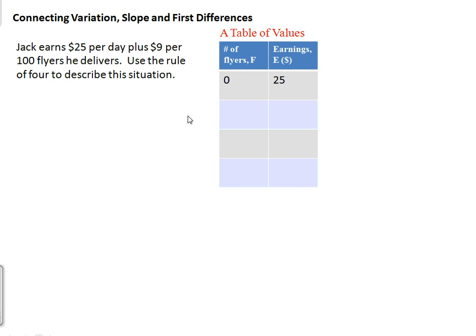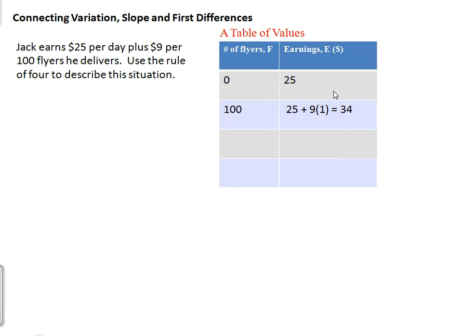Jack earns $25 per day plus $9 per 100 flyers he delivers. Use the rule of four to describe this situation. The question is already given to us in words, explaining exactly how much Jack is going to earn per flyer delivered. Starting our table of values: if Jack delivers zero flyers he still earns his base rate of $25. For every 100 flyers he delivers, he earns an additional $9. So if he delivers 100 flyers he gets $25 plus $9, which is $34.